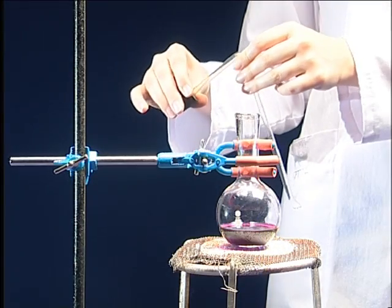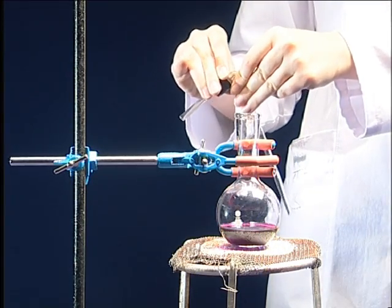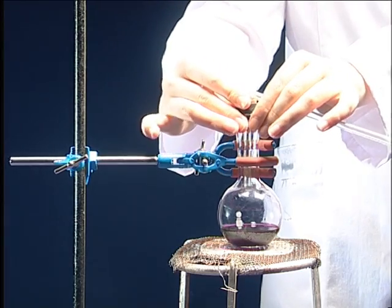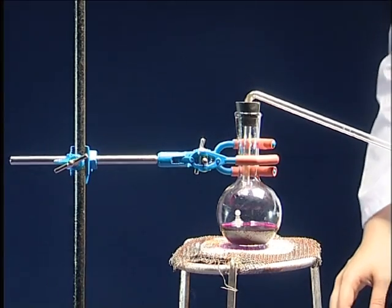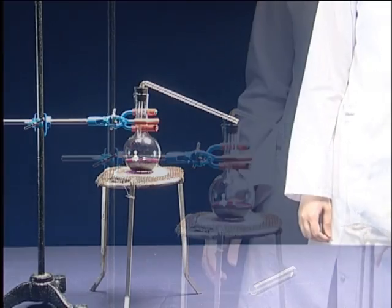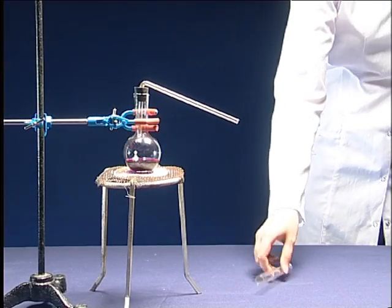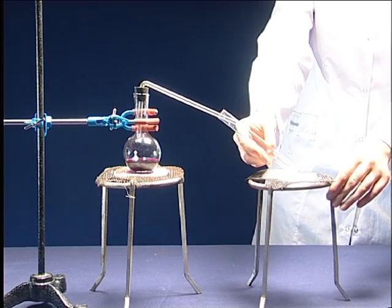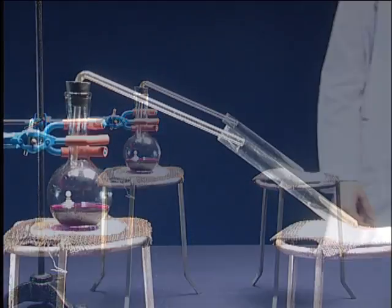A glass funnel is passed through the perforated stopper and inserted into the mouth of the Florence flask. Be careful not to leave space between the stopper and mouth of the flask. Place a test tube at the other end of the glass funnel and the system is established.